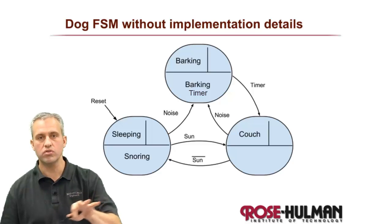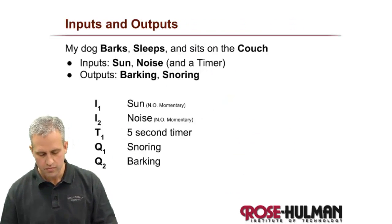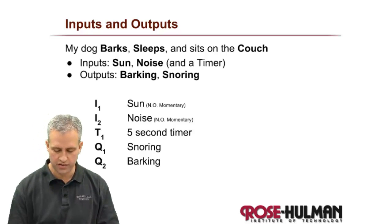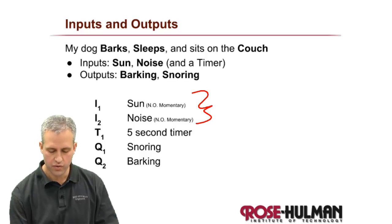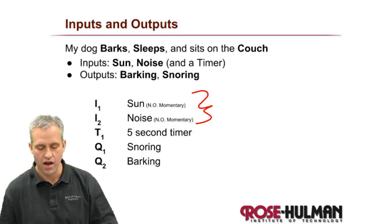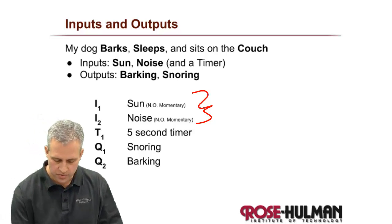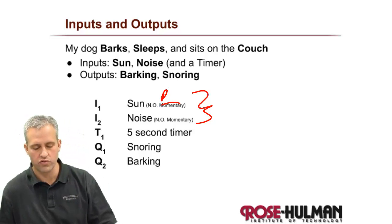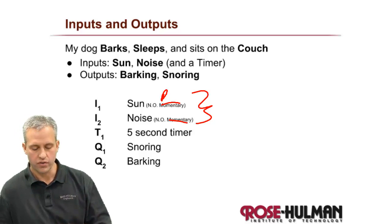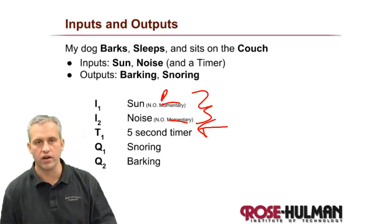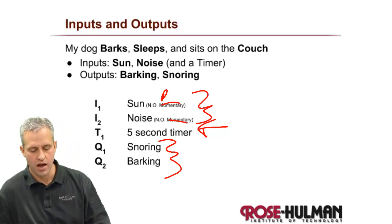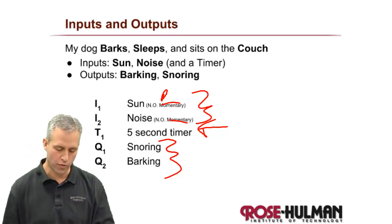Let's start by putting on the queue numbers and input numbers. You probably need somebody to tell you how the system is wired. So: I1 represents the sun — there's some sensor that detects the sun — and it's a position input. I2 represents whether there's noise or not, and that one really is momentary. For the timer we'll use Timer 1. Snoring is Q1 and barking is Q2 — this is our representation of a dog, maybe a robotic dog.